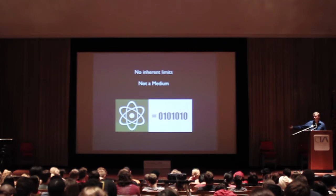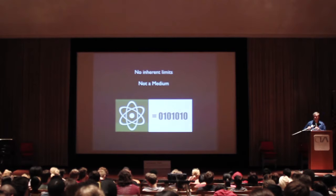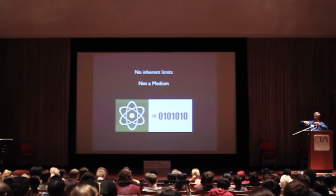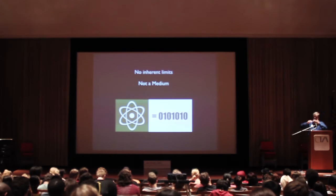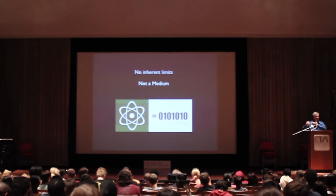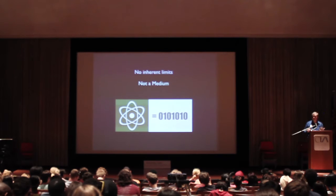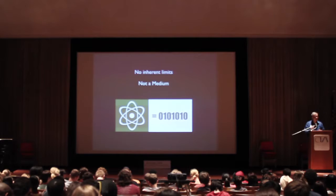Ones and zeros in the digital world are like atoms in the physical world. We don't interact with them directly, but they make everything. And as you see this less of a divide and you just have digital technology added on to the physical world, it's enabling like a superpower for the physical world rather than something that's separate from it, and it has no inherent limitations.